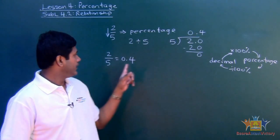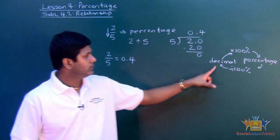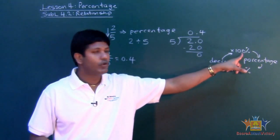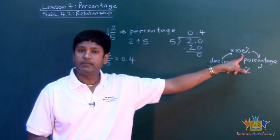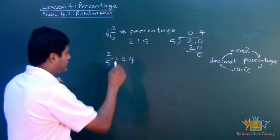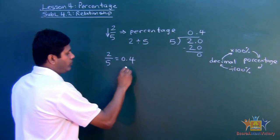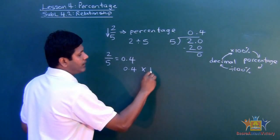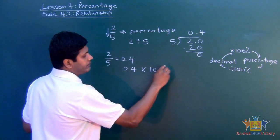So we're going from decimal to percentage. What are you going to do? We're going to multiply by 100%. I take 0.4 and I times it by 100%.